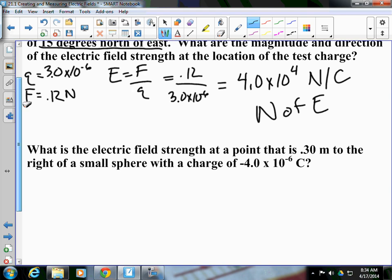Remember, Coulomb's Law is force equals k times q1 times q2 over r squared. k is not going to change. k is Coulomb's constant, 9.0 times 10 to the 9th, times q1. q1 is going to be our original charge here in the problem, negative 4.0 times 10 to the negative 6, times q2.